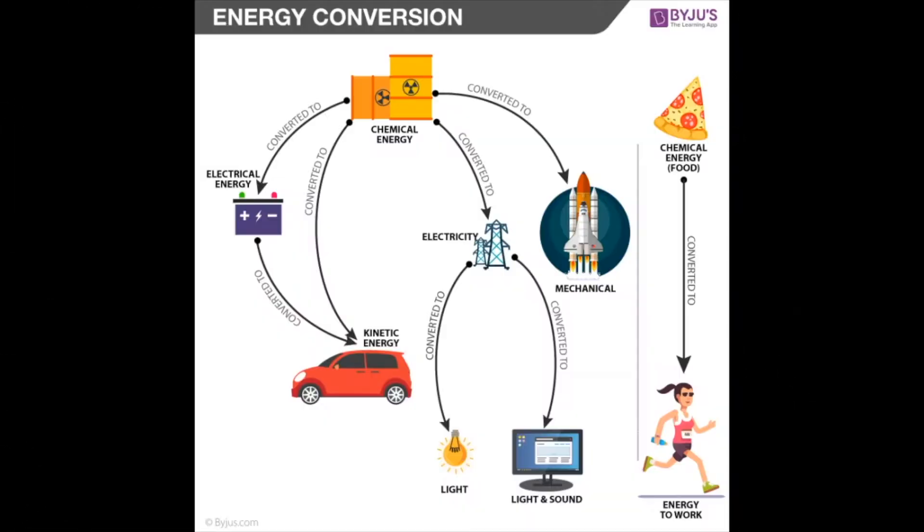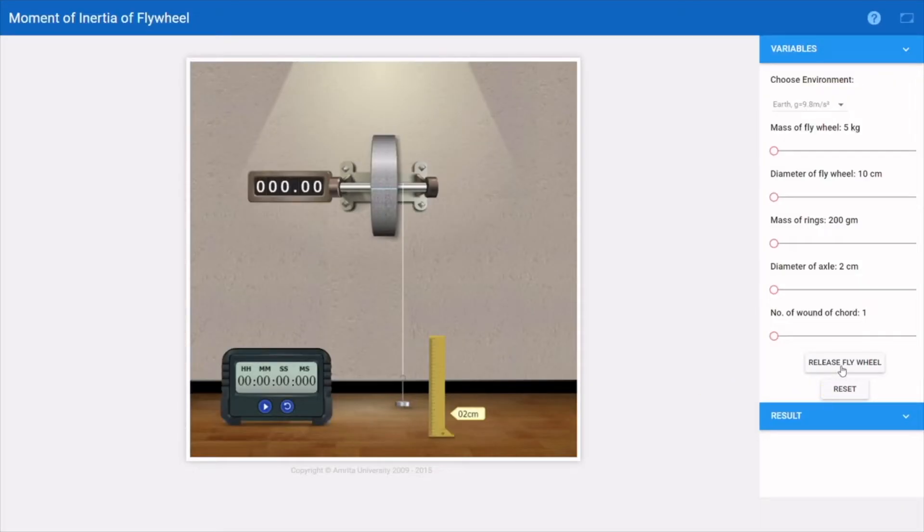Now we will understand the concept behind this experiment. As we know, in this universe the total energy is conserved. We can convert one type of energy into another type of energy, but we cannot produce or destroy any type of energy.